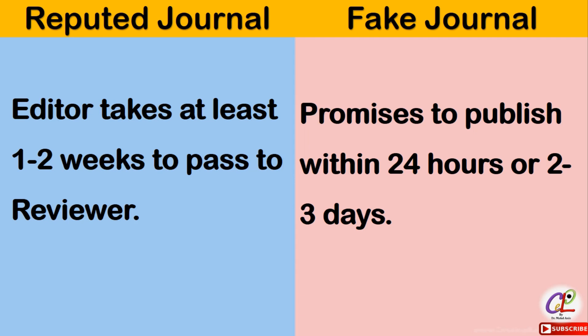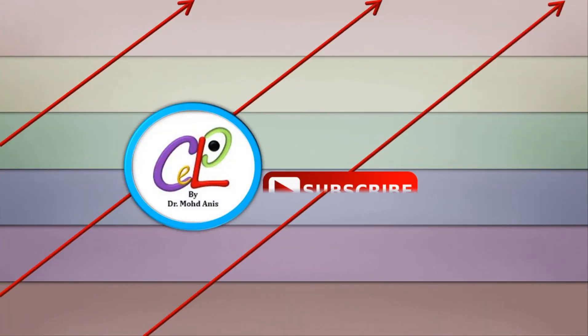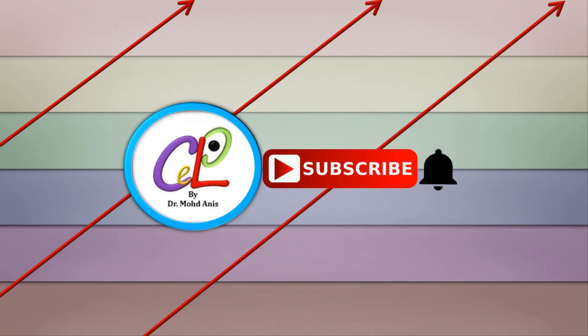So you need to be very careful while selecting the journal for publication of your research article. You can take these five parameters into account to choose a very suitable and reputed journal for publication. For more such informative videos and research assistance, do subscribe to the channel and click the bell icon for instant updates.